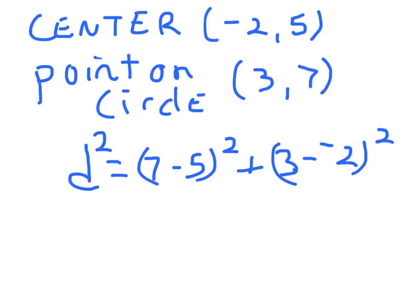3 minus negative 2 squared. 7 and 5 are 2 apart. That makes sense. 3 and negative 2. How far apart are they? They are 5 apart. Now, we're going to go 3 back to 0 and then another 2 more. So that's 4. That's 25. So this is 29.